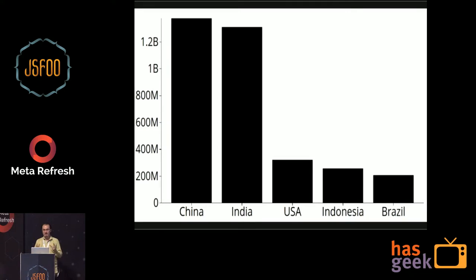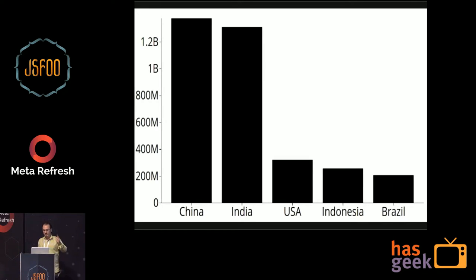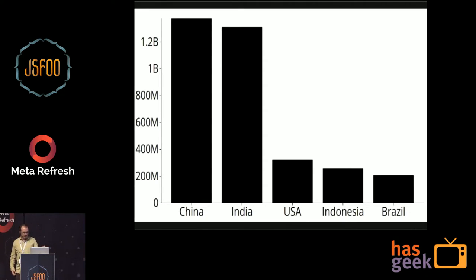Let's give some meaning to these bars. Here's a bar chart that shows the top five largest countries in the world by population. You can see it's India, China, US, Indonesia, and Brazil.